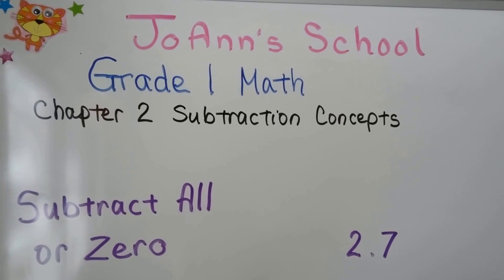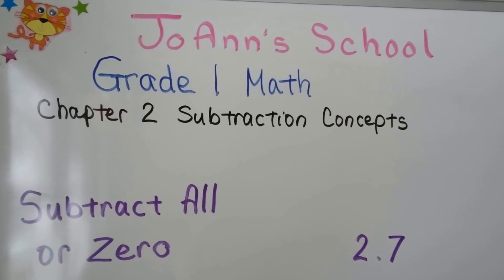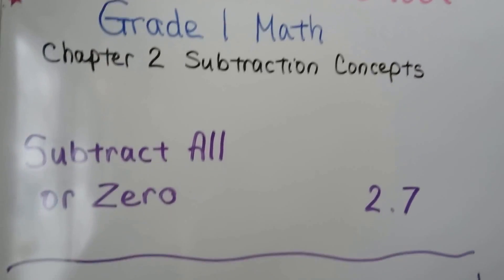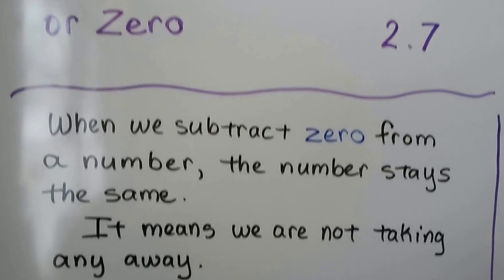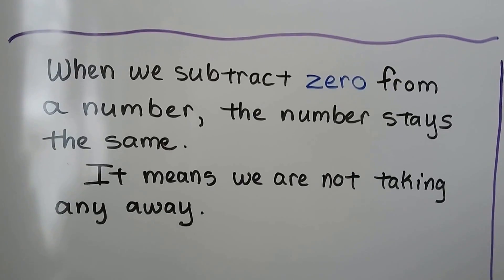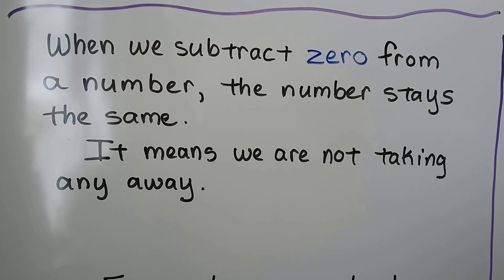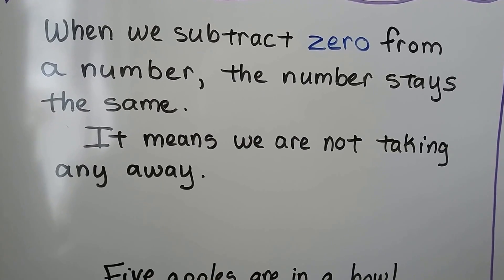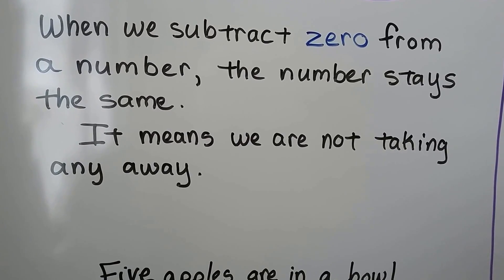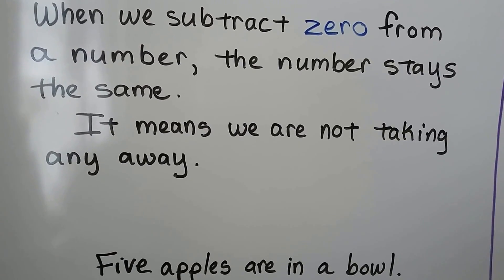Subtract all or zero, lesson 2.7. When we subtract zero from a number, the number stays the same. It means we are not taking any away.